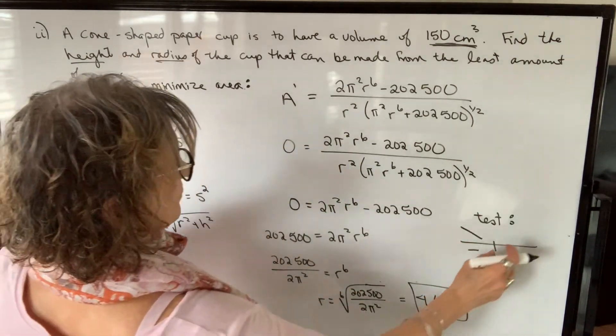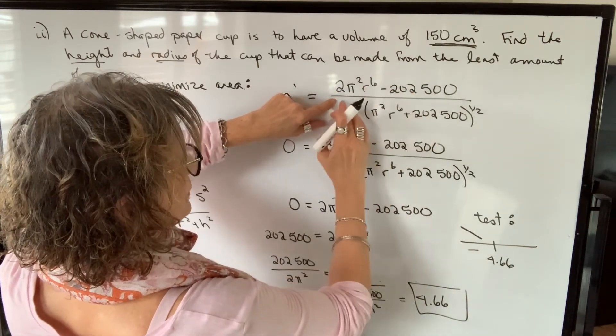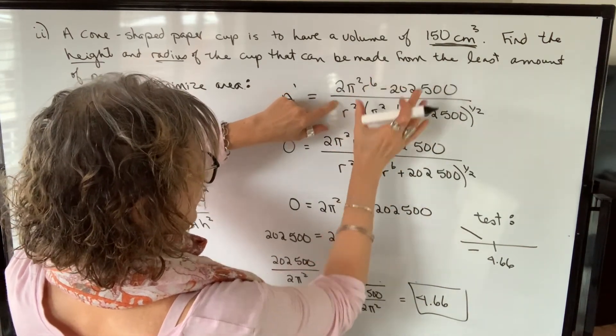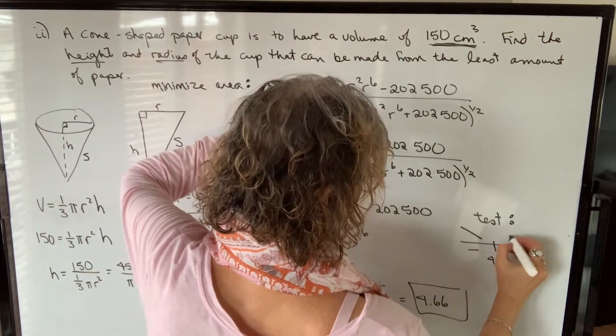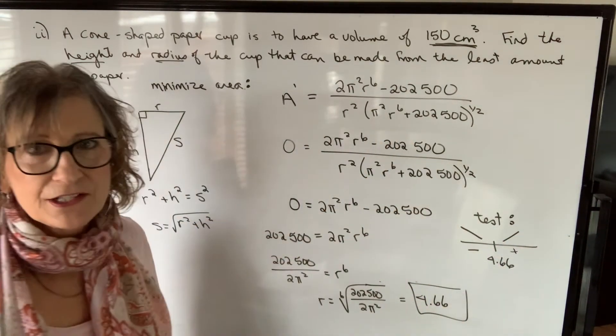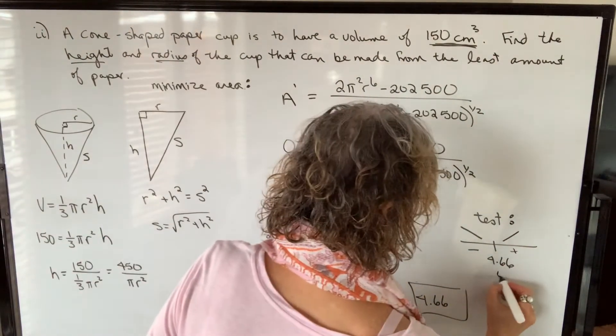Then if we pick something like 10, 10 to the sixth power is way larger. So we know that we have a positive numerator and obviously our denominator is positive. So the function is increasing in that interval. So we know that this is a minimum point.